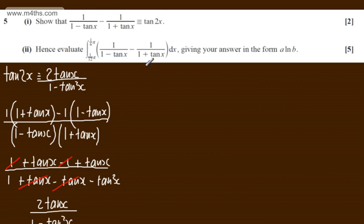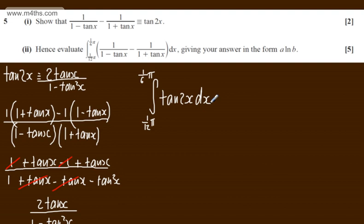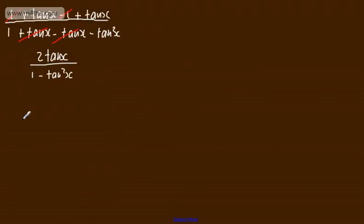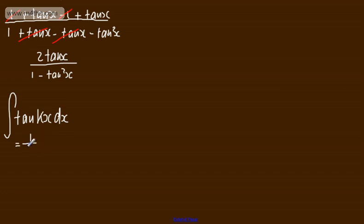Instead of writing the original expression, we can simply write tan 2x. So we're looking at the integral from pi by 12 to pi by 6 of tan 2x with respect to x. We can use the standard result: the integral of tan(kx) dx equals (1/k) times the natural log of sec(kx) plus a constant.